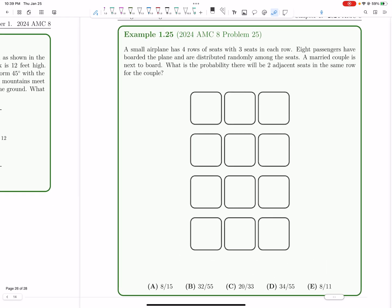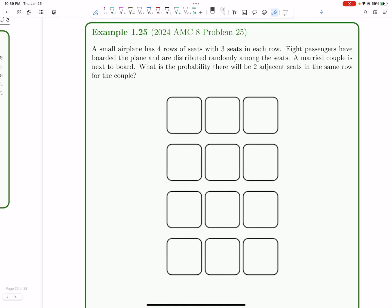Let's now tackle number 25 on the AMC-8. A small airplane has four rows of seats with three seats in a row. Eight passengers have boarded the plane and are distributed randomly amongst the seats. A married couple is next to board. What's the probability there's going to be two adjacent seats in the same row?